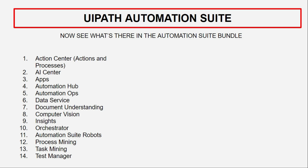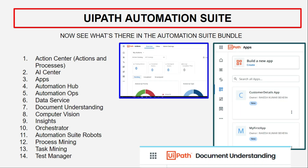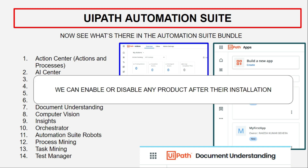For example, here I'm presenting around 14 different products that we have from UiPath at the moment, and in the future the list might grow. We have Action Center, AI Center, Apps, Automation Hub, Data Service, Document Understanding, Computer Vision, Task Mining, Test Manager, and so many more. Now, what exactly is automation suite? We'll understand that now.